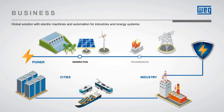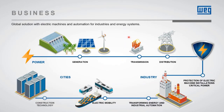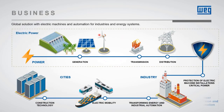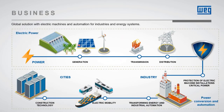This picture brings a clear understanding about where VEG is present. VEG offers products and solutions since the generation, transmission and the use of energy. For example, in the industrial field: supply motors, drives, automated systems, electric mobility, and residential and commercial applications as well.